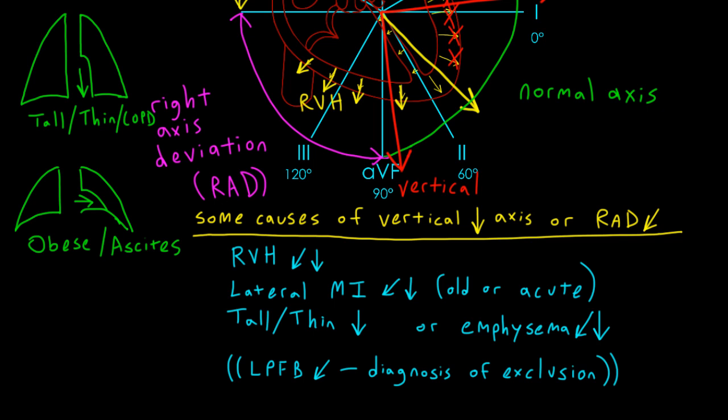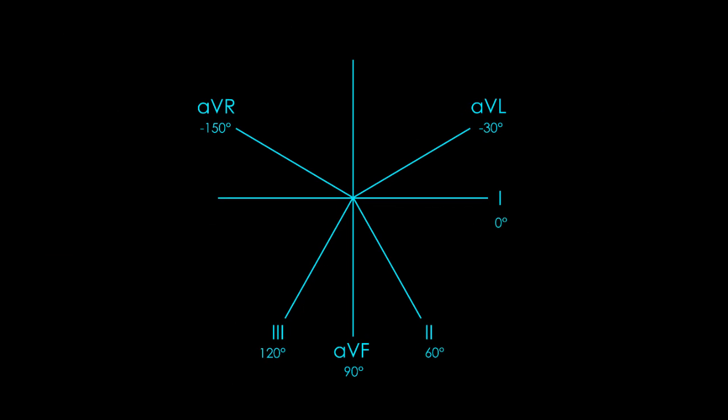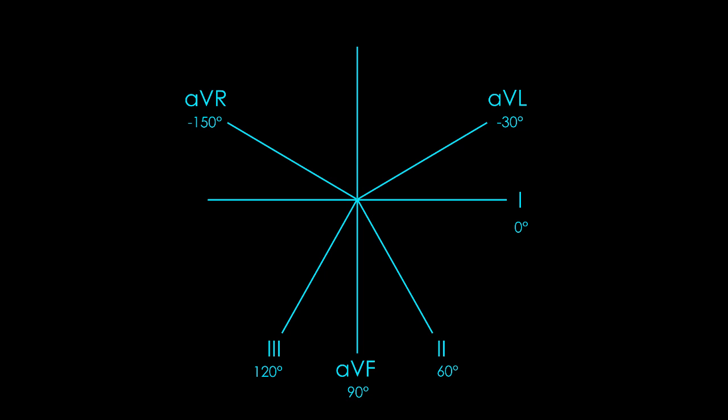Now that I've given you a brief overview of the kinds of things that can affect the QRS axis in the frontal plane, let's talk about how to determine the axis from the EKG. To understand this, let's review the concepts of positive, negative, and isoelectric. Remember that when you have depolarization moving in the direction of a lead, you get a positive electrical deflection, and when depolarization moves away from a lead, you get a negative deflection.